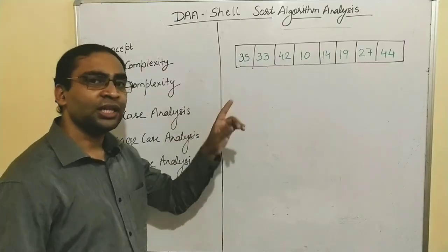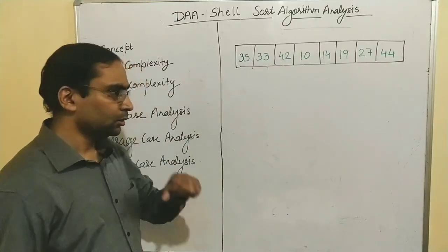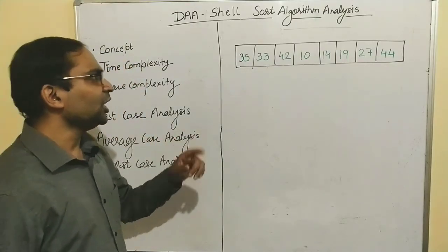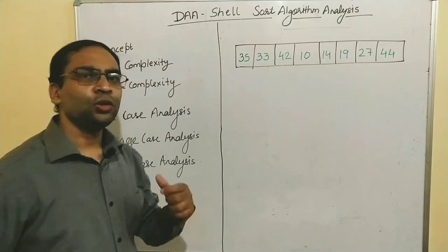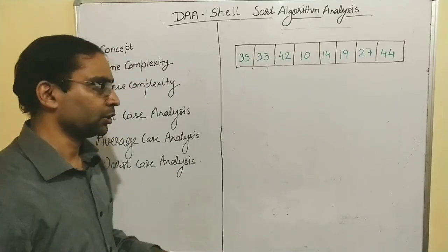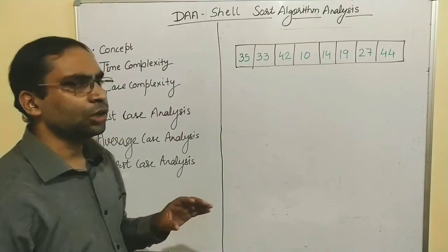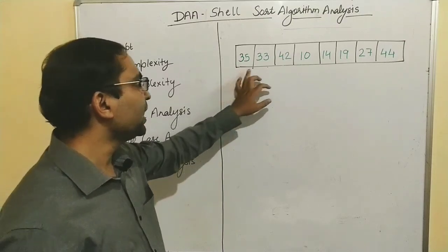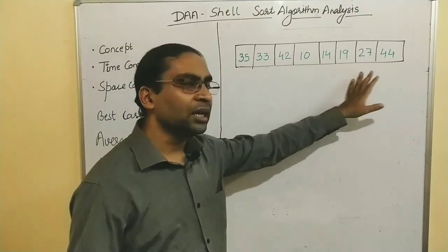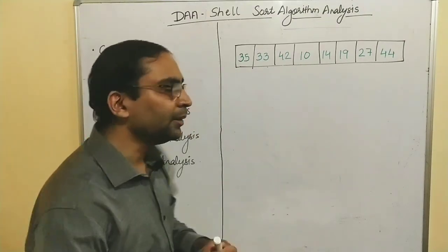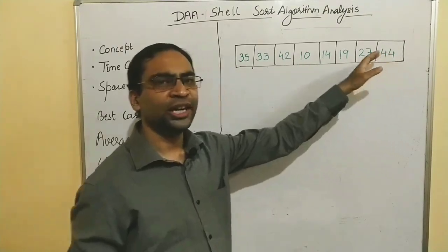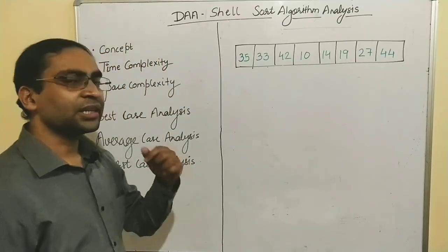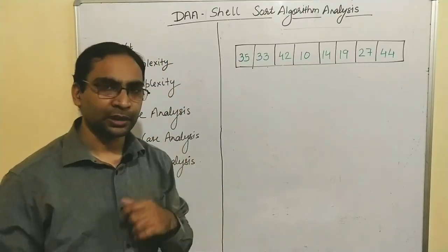In Shell Sort, we first find an interval. To find the interval, we take n — the length of the array — divided by 2. For example, with n=8, 8 divided by 2 gives us 4. So 4 is our first interval.